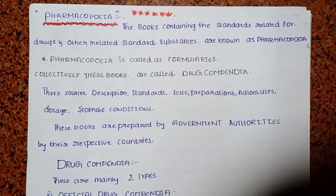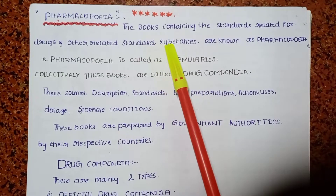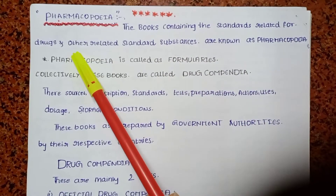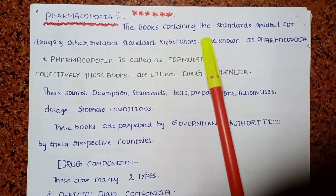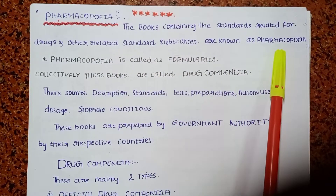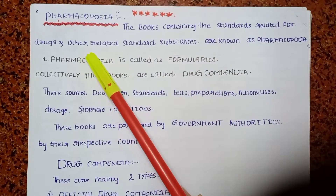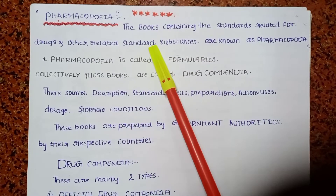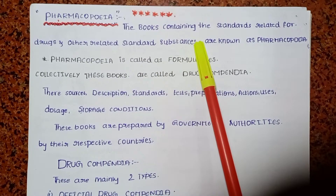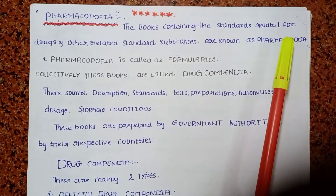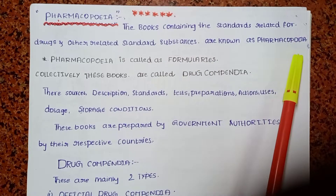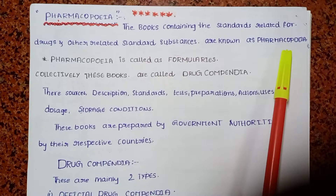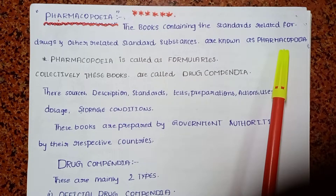The definition of pharmacopoeia: books containing the standards related to drugs and other related substances are known as pharmacopoeia. It is a book which gives information about drugs, drug preparations, and the purity of the drug.